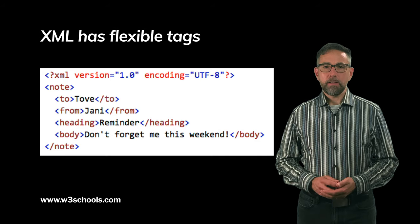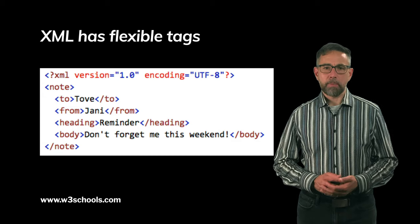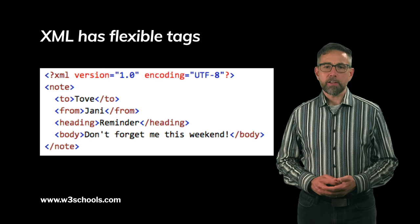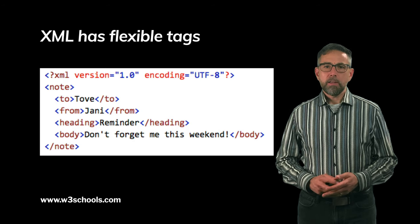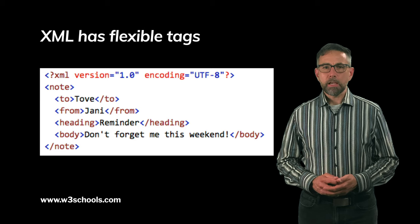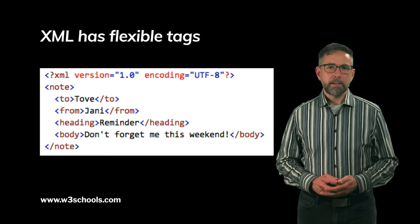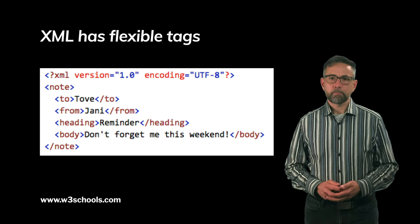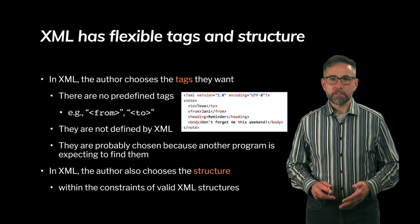XML has flexible tags. Here's an example of XML. The first line is a declaration informing any computer processor reading it that what comes next is XML and what version it is. Then you see tags — for example, the word 'note' with angle brackets around it. That tag is paired at the bottom with another tag that has 'note' in it but also has a forward slash at the beginning. Those are called opening and closing tags. The editor I screen captured this from color-coded some words to indicate their different roles in the document.